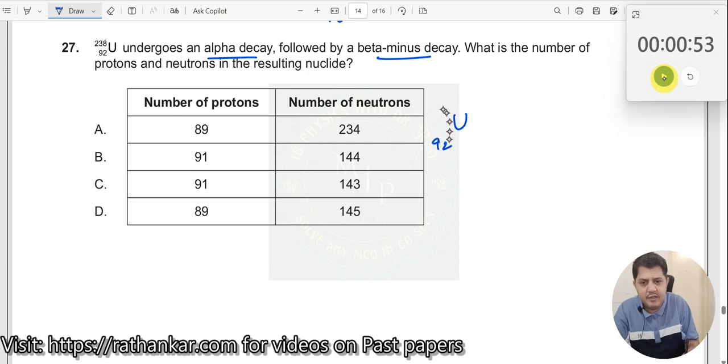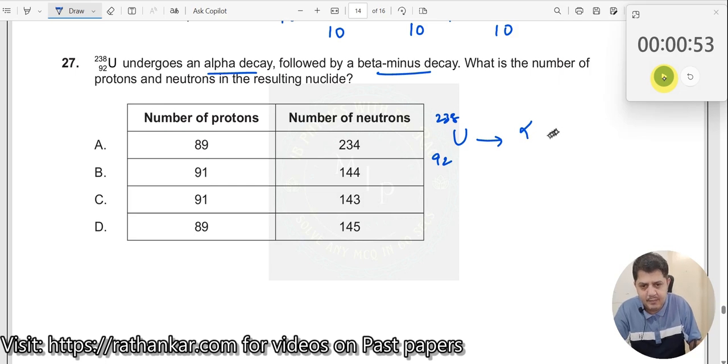So you have 92, 238. First an alpha decay is formed plus some nucleus, and after this a beta decay is formed plus a nucleus. What is the number of protons and neutrons in the resulting nuclei? What is the resultant over here? So what is alpha decay?